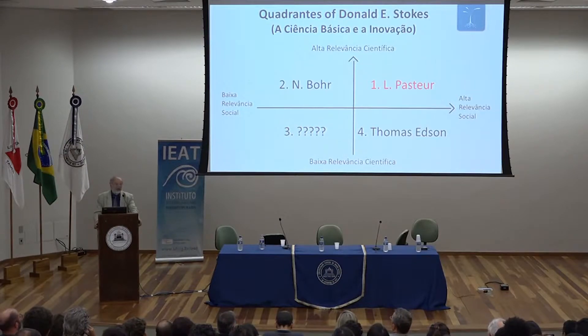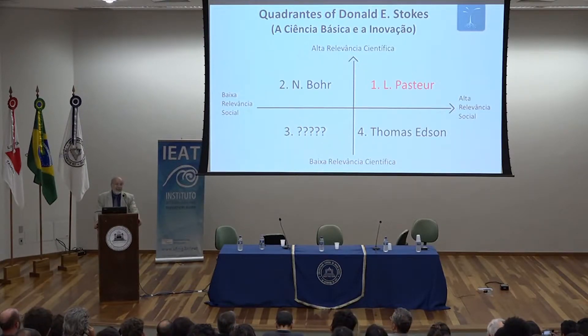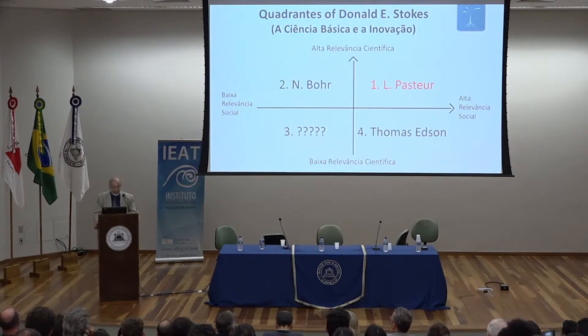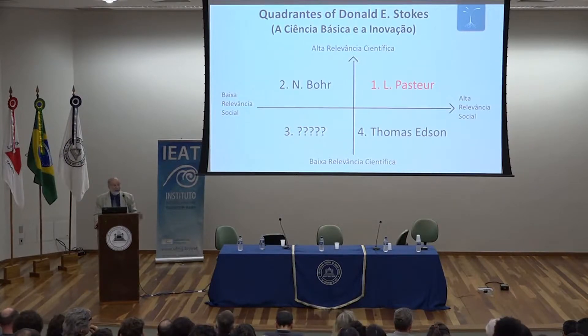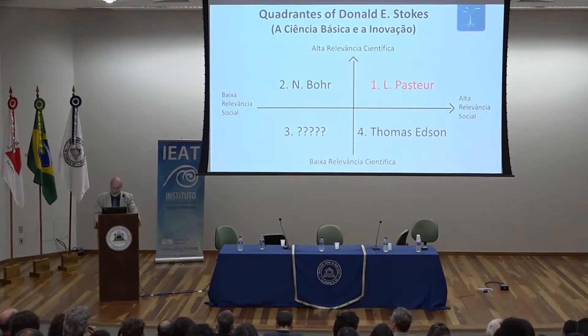Of course, quadrant two is important — it's very important and will continue to be. So for a quality university, one practices quadrant one and quadrant two, and to a lesser extent quadrant four is also acceptable. Certainly, quadrant three is not suitable for anything, but there is a lot of it.